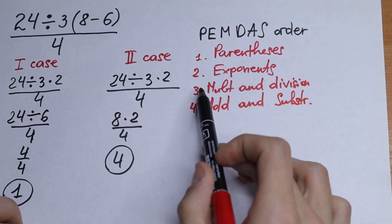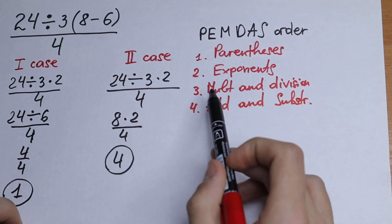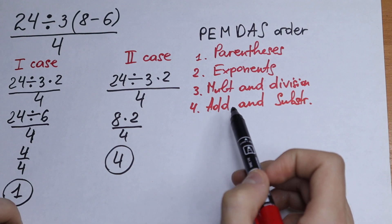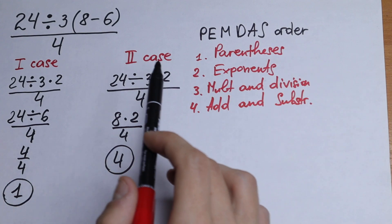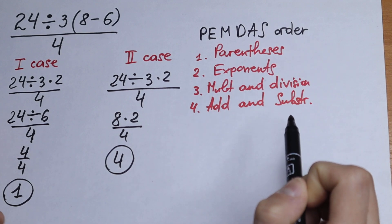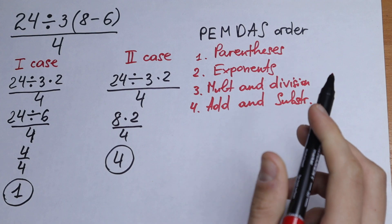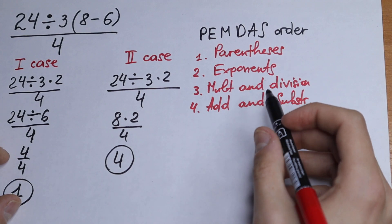So we have a question with our PEMDAS rule. We have parentheses, exponent, multiplication and division, and the last addition and subtraction. So what we're going to do in our case? We have multiplication and division. But the main thing I wanted to show you is that this works from the left to right.